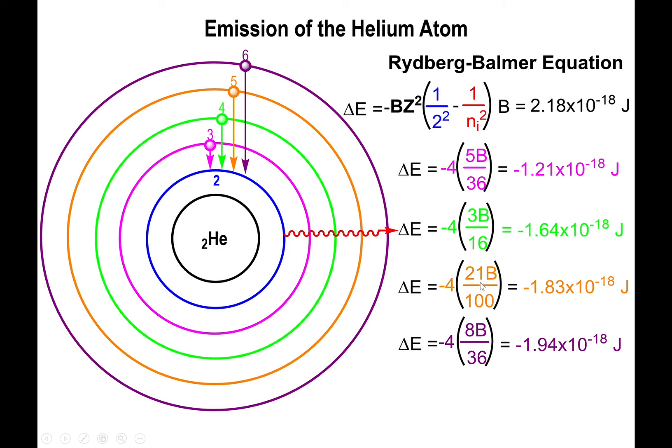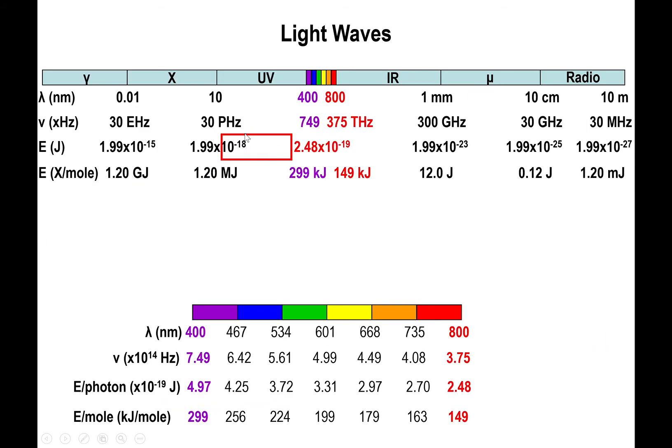Starting at about 1.2 and going up to 1.9, but the fact that we're at 10^-18 joules means that we are outside of the visible region. Specifically, we're somewhere in the ultraviolet region. So this is not providing visible light for helium.